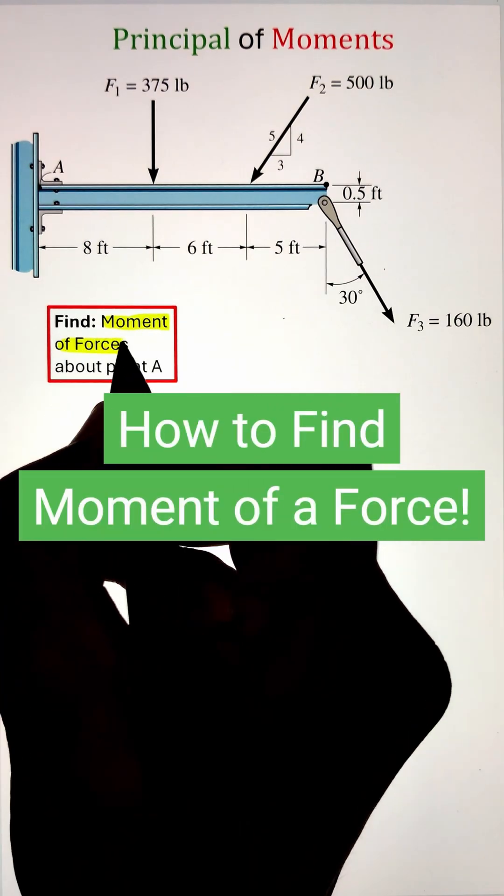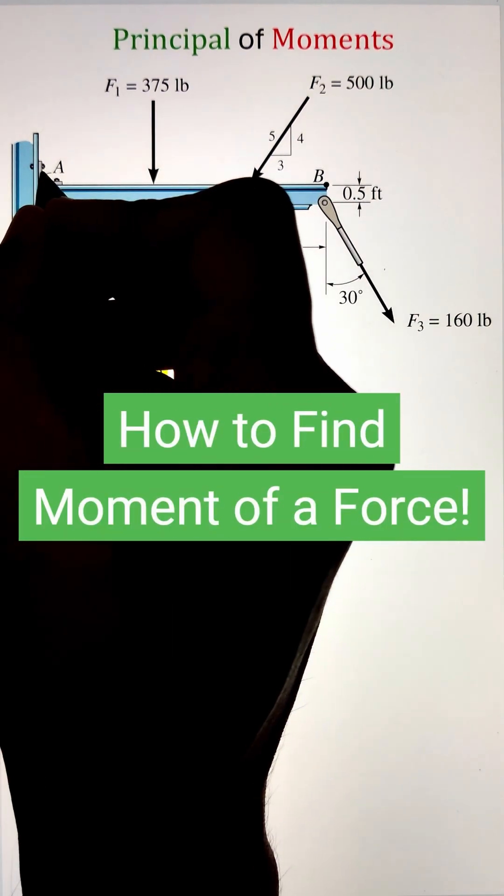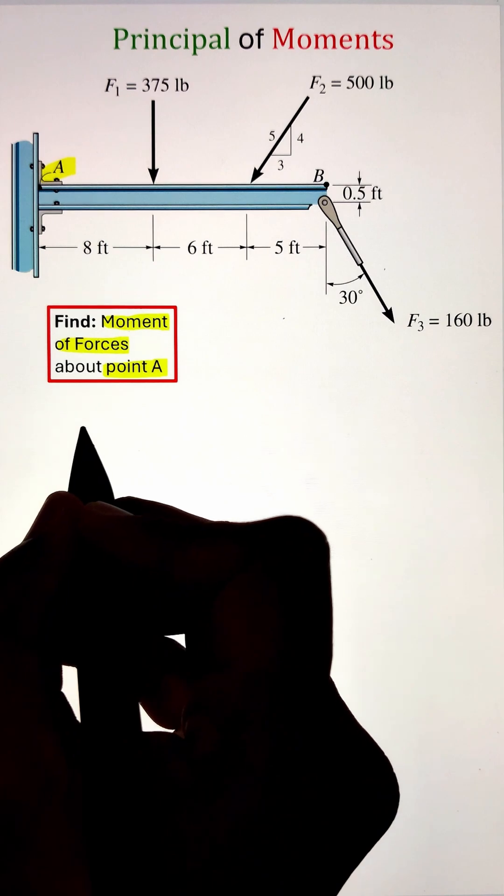To find the moment of forces about point A, we start by establishing our sign convention. In this case, I'm considering counterclockwise moment as positive.